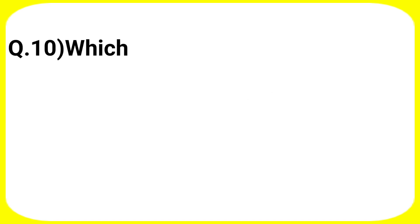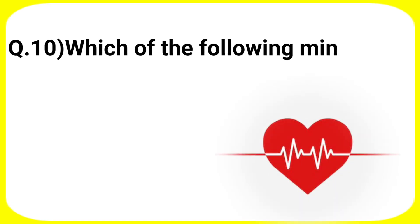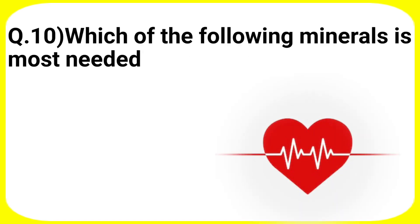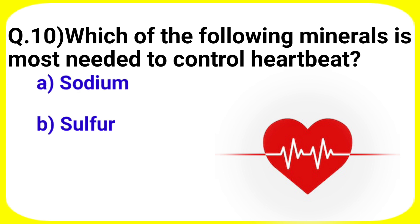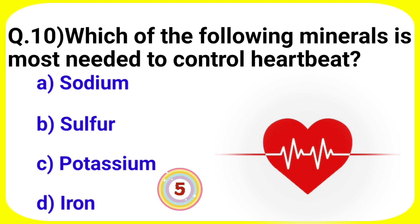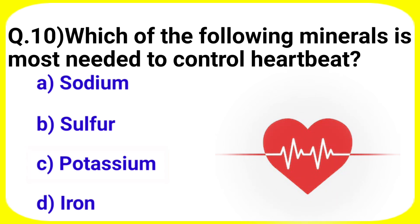Next question: Which of the following minerals is most needed to control heartbeat? Your options are A. Sodium, B. Sulphur, C. Potassium, D. Iron. Answer is option C. Potassium.